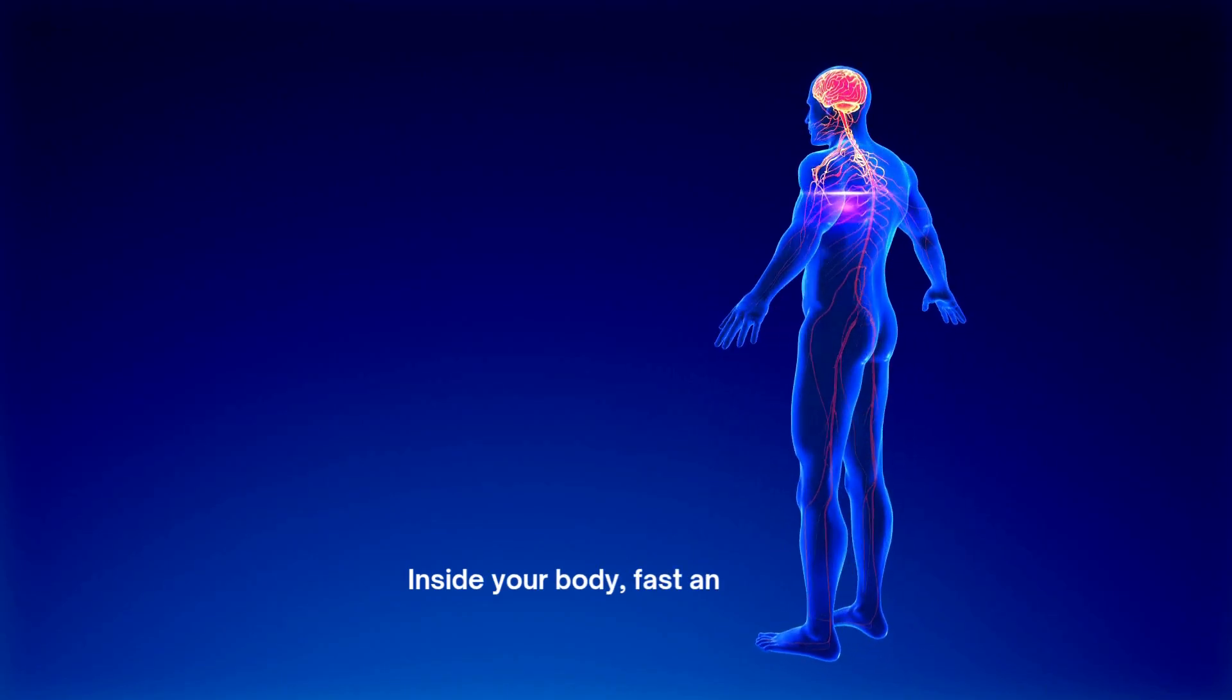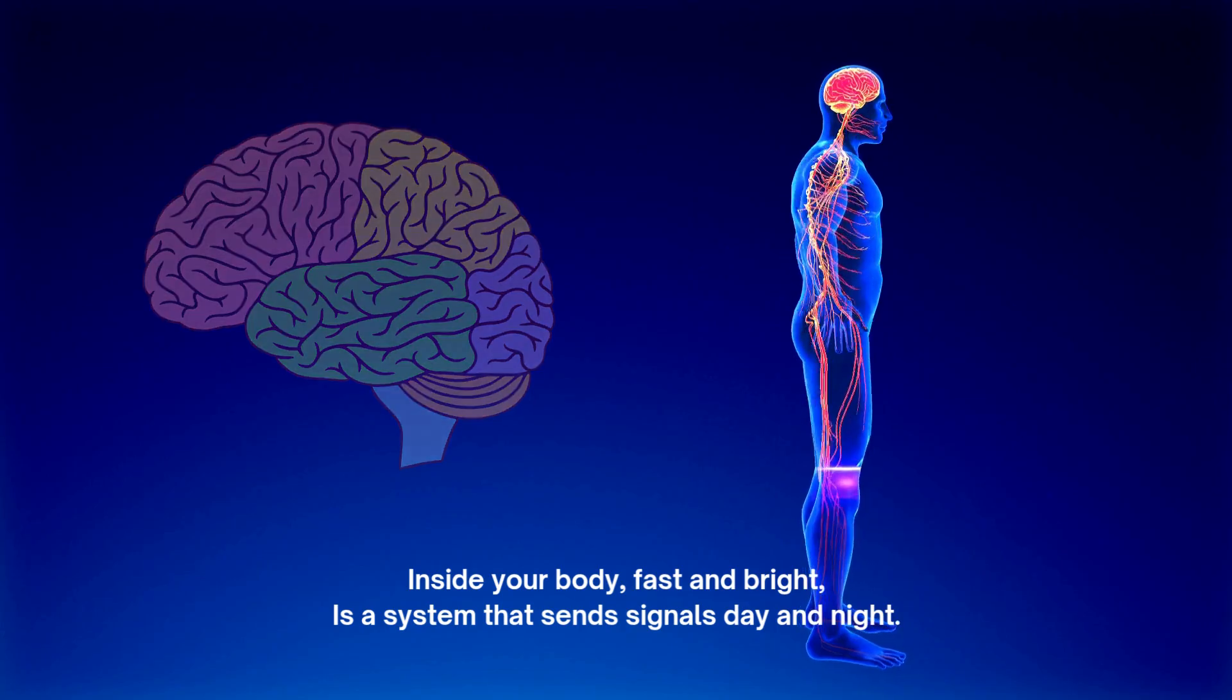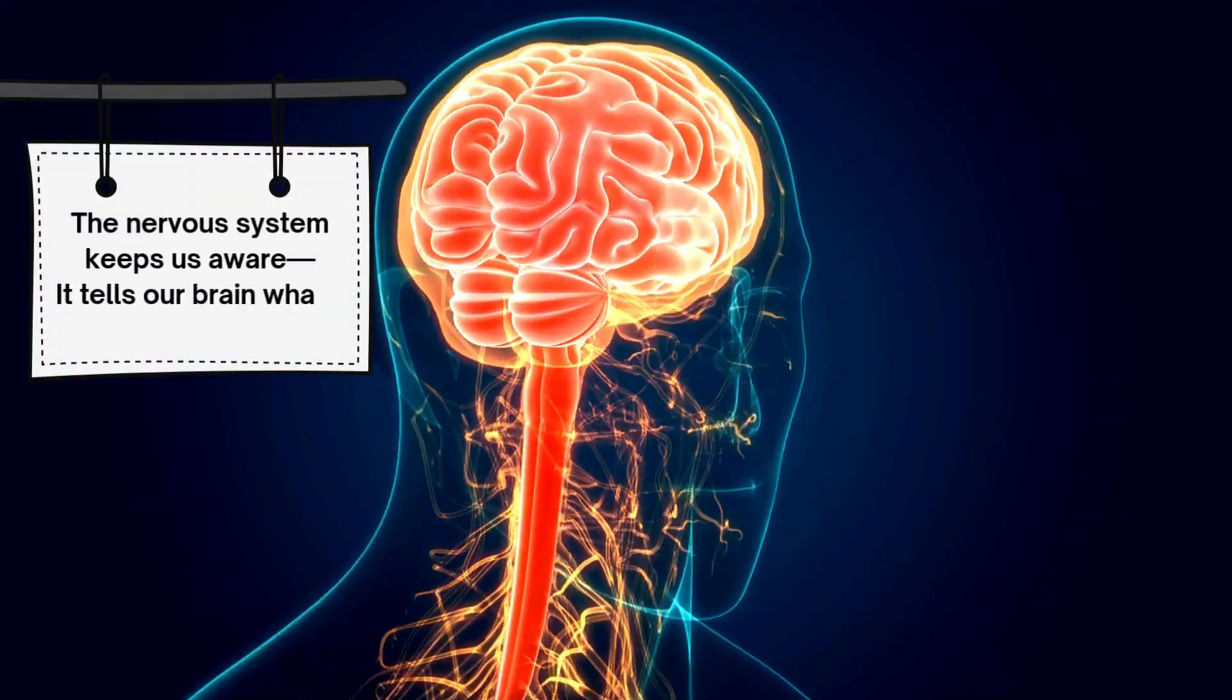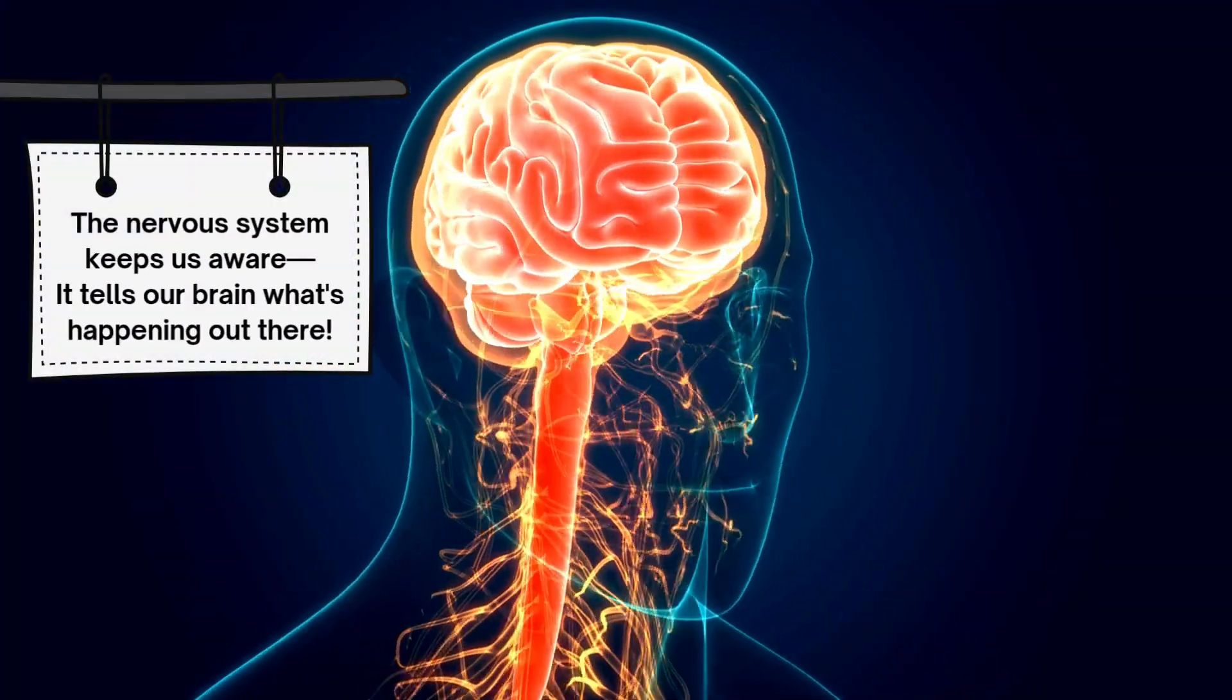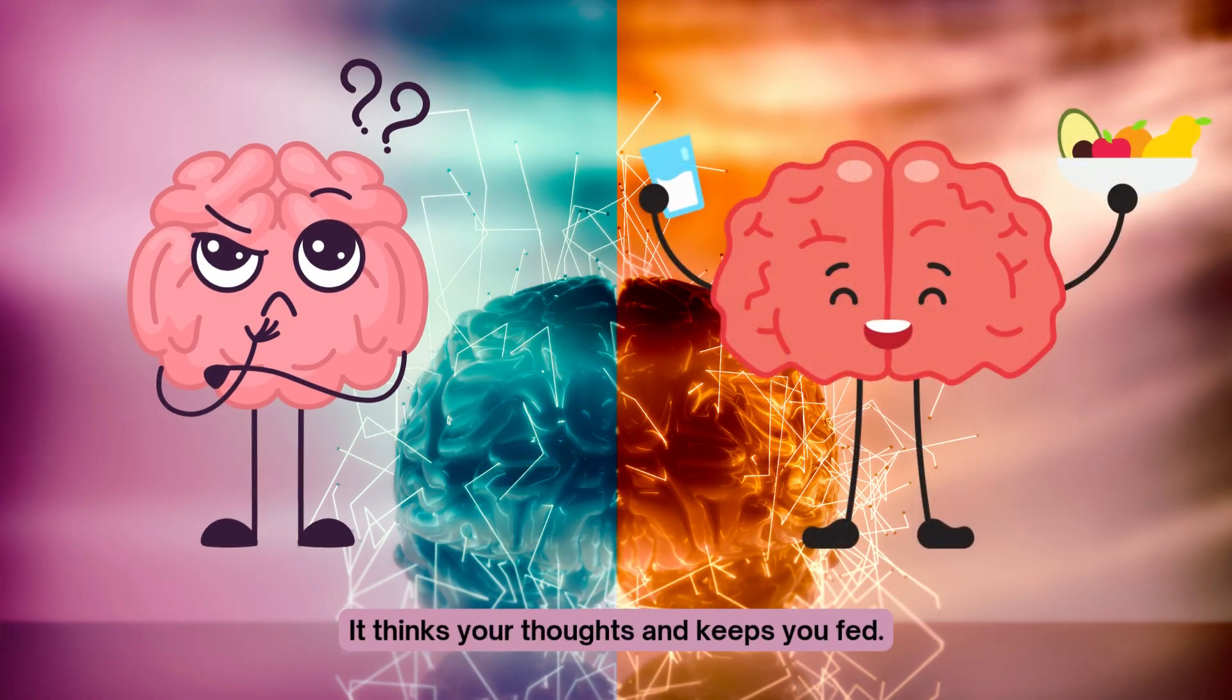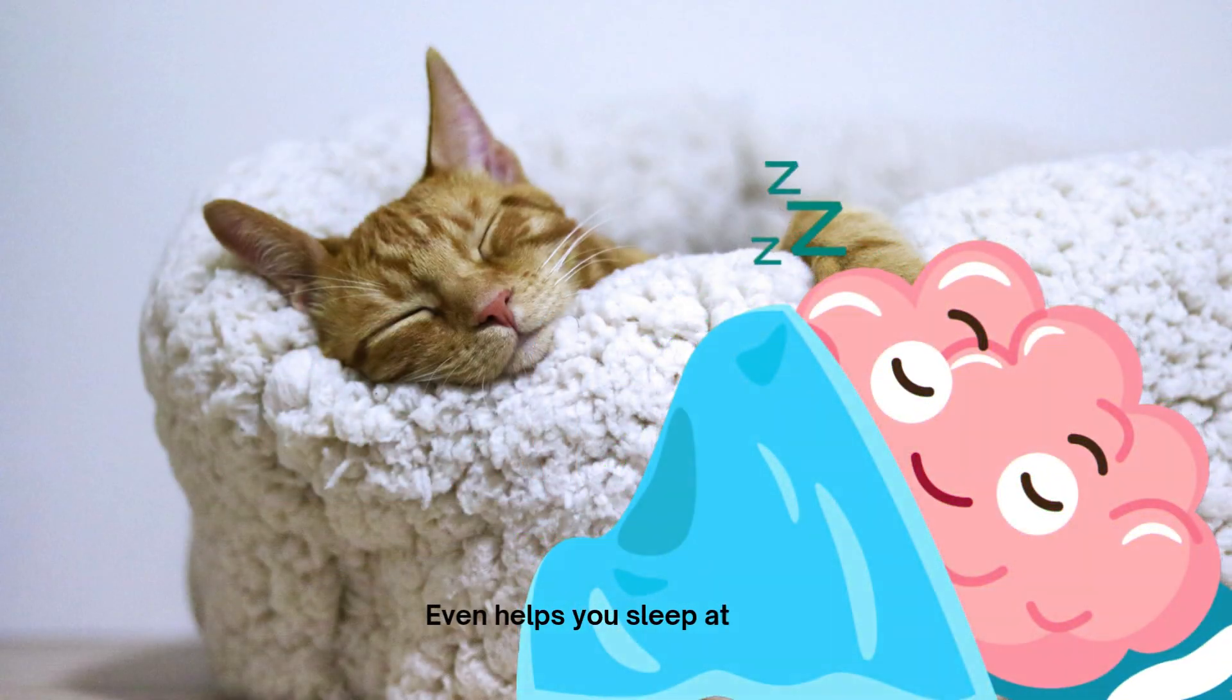Inside your body, fast and bright, is a system that sends signals day and night. The nervous system keeps us aware, it tells our brain what's happening out there. Your brain is the boss up high in your head, it thinks your thoughts and keeps you fed. It controls your moves, your words, your sight, even helps you sleep at night.